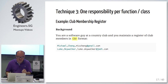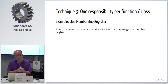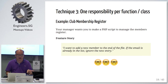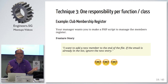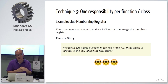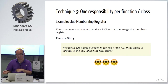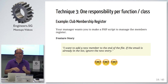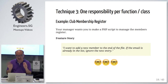You have this CSV file, and your manager comes to you and says, hey, why don't you come up with a PHP script that manages the registry? This is the feature story. If you do Agile like I do, you file a feature story in Pivotal Tracker with this description: I want to add new members to the end of the file. And if the email is already in the list, ignore the new entry. So basically, if it's new, add it in. Otherwise, if the email is already there, ignore it and don't insert into the file. Simple enough.